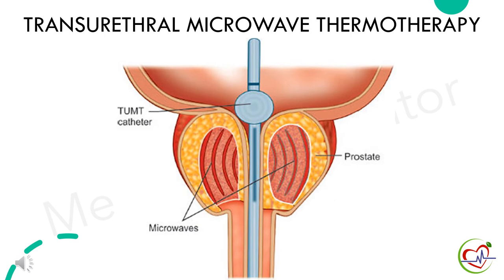The next procedure is transurethral microwave thermotherapy. The surgeon inserts a special electrode through the urethra into the prostate area. Microwave energy from the electrode destroys the inner portion of the enlarged prostate gland, shrinking it and easing urine flow. This procedure is only used in small prostates and will only partially relieve the symptoms.